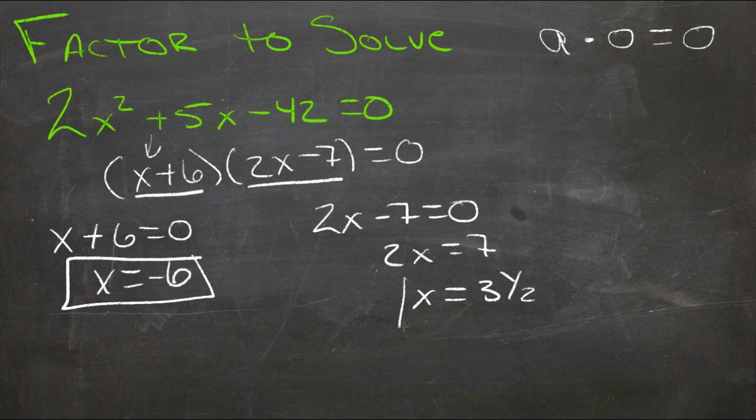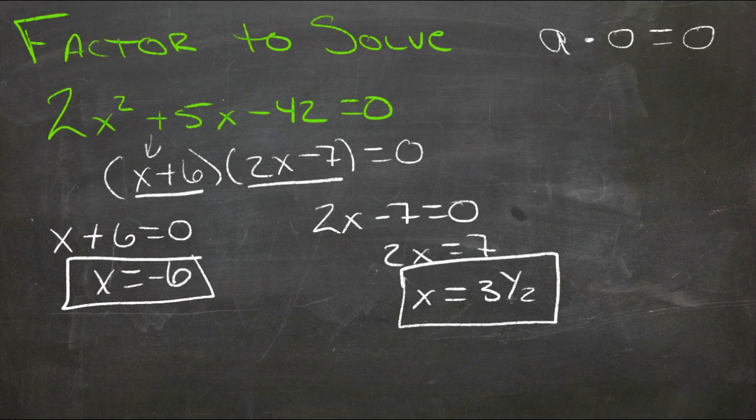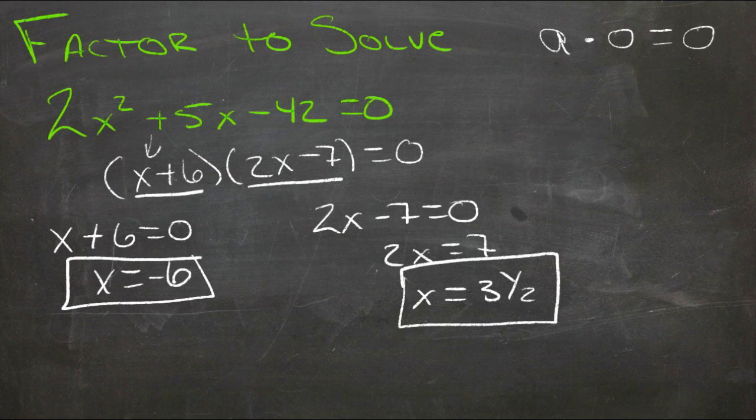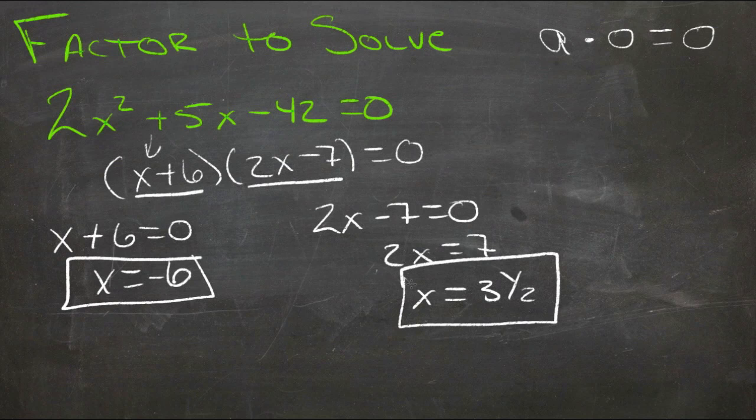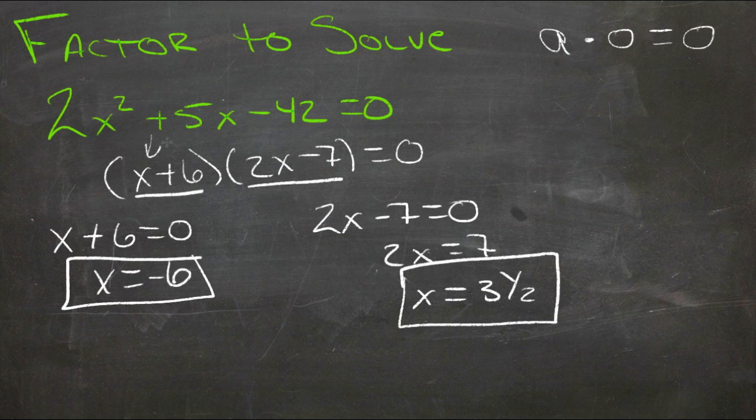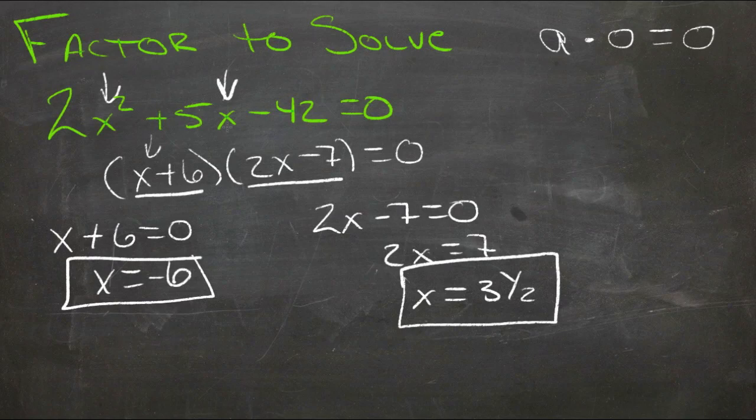So now that we know what x is for this side, if we were to plug 3 and a half in for x here, we'd get zero for this term. This term would be 9 and a half, but it wouldn't matter, because 9 and a half times zero is zero. So for this statement, x equals negative 6, or x equals 3 and a half, are the two values that we could plug in for x up here to make the equation true.